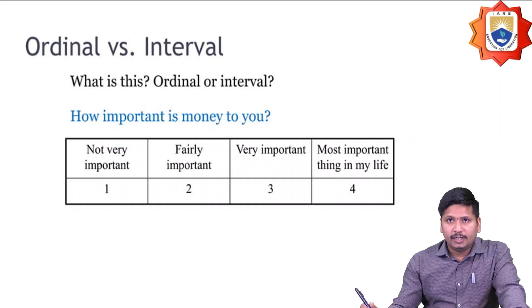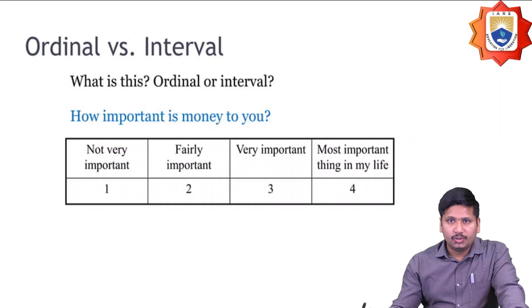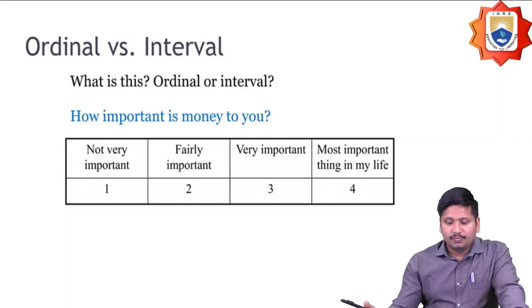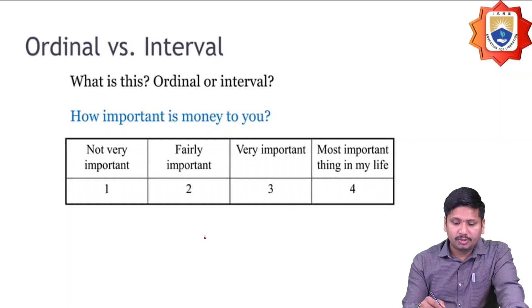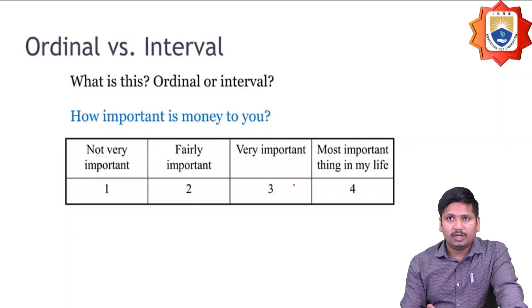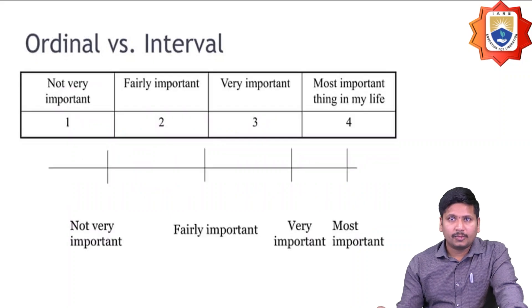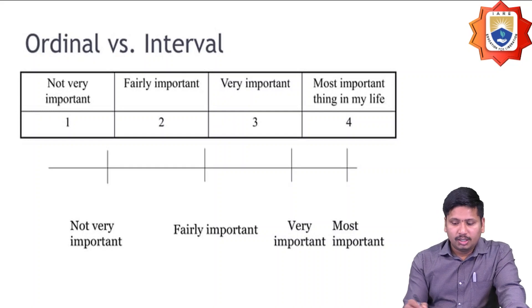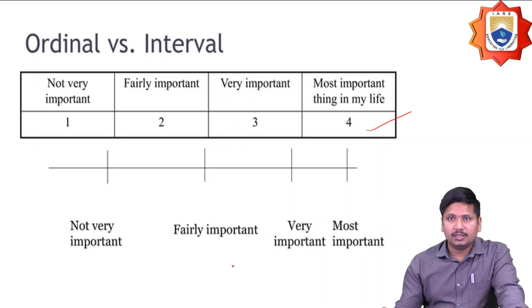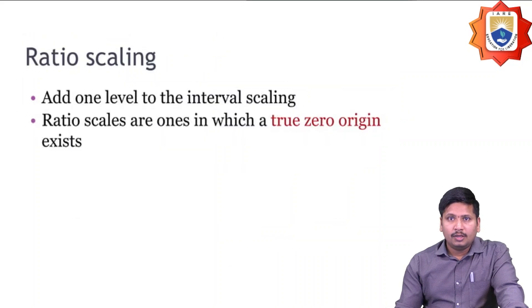To understand the difference between ordinal and interval: consider the question 'How important is money to you?' with options: not very important, fairly important, very important, and most important. While this follows an order (ordinal property), it also maintains equal intervals of one — so one must carefully determine whether such data is ordinal or interval.